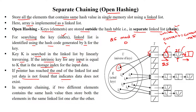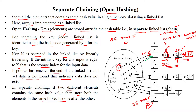If the pointer reaches the end of the linked list and the data is not found, it indicates the data does not exist at that index. In separate chaining, if two different elements have the same hash value, both are stored in the same linked list one after another. For example, 35 mod 5 also gives index 0, so 35 is stored at the same index by adding a node at the end of the linked list.